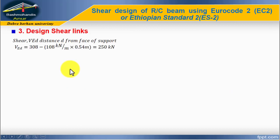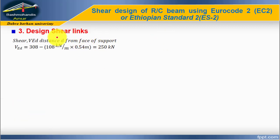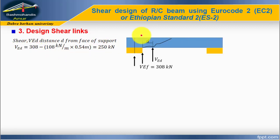Step number three: design shear links. An important step here is to calculate VEd at the effective depth distance d from the face of the support. The shear force VEd at this location is 308 kN.